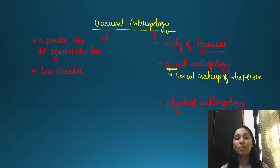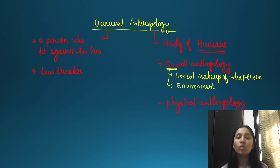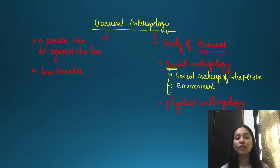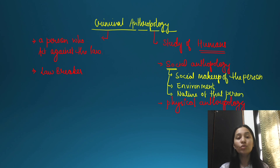The type of environment we live in greatly affects our behavior — the way we talk, think, and process things. It gives a remarkable impact. Social anthropology helps us understand the social makeup, social environment, and nature of that person — anything related to social factors.